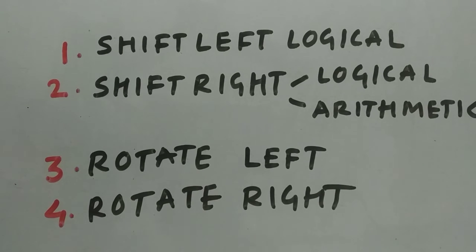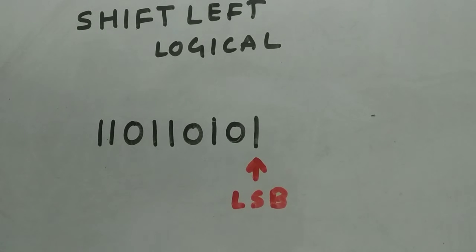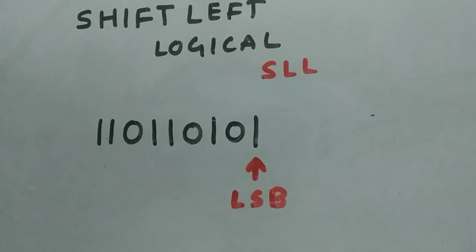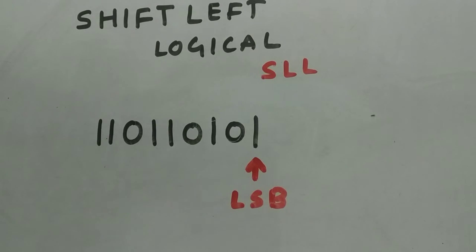First let's go to shift left logical. To explain shift left logical I'm going to take a small example: the binary number is 1 1 0 1 1 0 1 0 1. Since we are shifting left, from the LSB you need to shift left — let's say we are shifting by three bits.